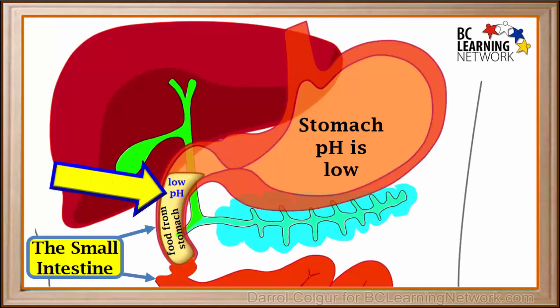After digestion takes place in the stomach, the food enters the top part of the small intestine. When it first enters, its pH is still low, but this is much too acidic for the small intestine.